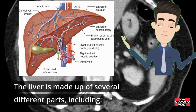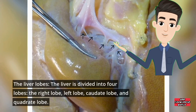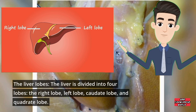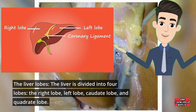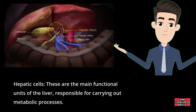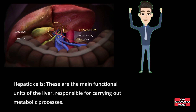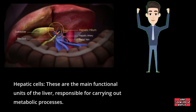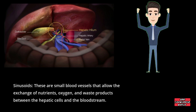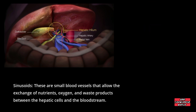The liver is made up of several different parts. The liver lobes: the liver is divided into four lobes — the right lobe, left lobe, caudate lobe, and quadrate lobe. Hepatic cells are the main functional units of the liver, responsible for carrying out metabolic processes. Sinusoids are small blood vessels that allow the exchange of nutrients, oxygen, and waste products between the hepatic cells and the bloodstream.